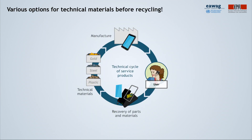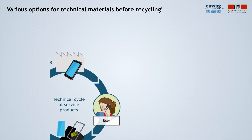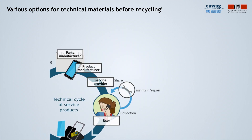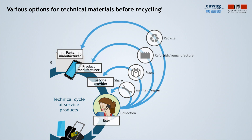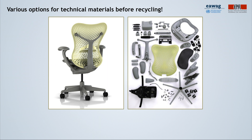Of course, the product use stage can be extended through reuse and repair. Also, after disassembly, parts can be used for refurbishment and remanufacture of the products. Here you see an example of complete disassembly into the parts and their corresponding materials.